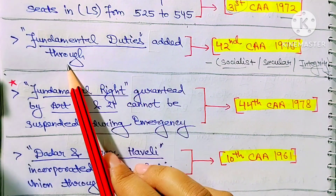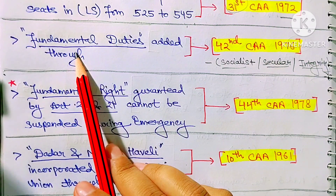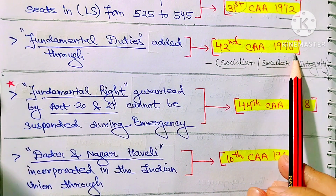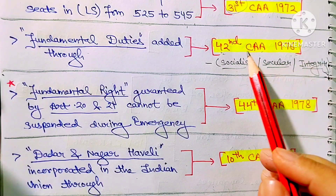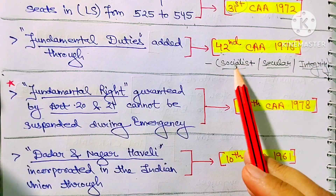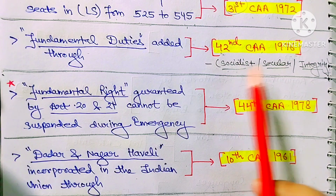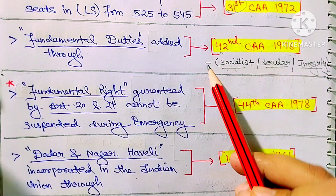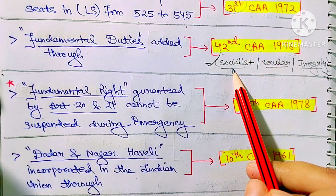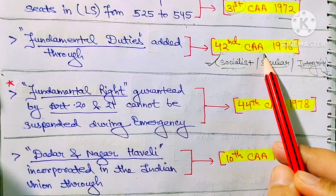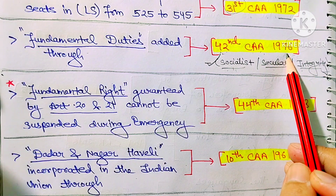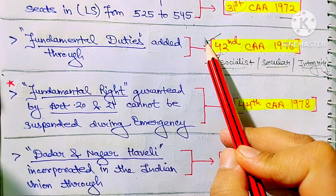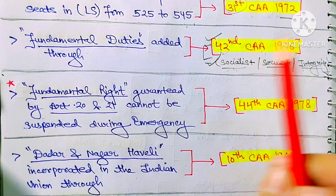Next: Fundamental Duties were added through the 42nd Constitution Amendment Act 1976. As mentioned earlier, this same amendment act also added three words — Socialist, Secular, and Integrity — to the Preamble. Fundamental Duties were also added through this same amendment act.